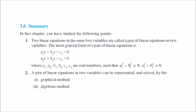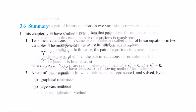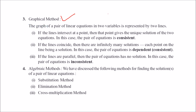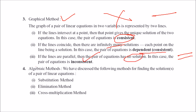To summarize: two linear equations in the same two variables are called a pair of linear equations in two variables. The general form is a1x plus b1y plus c1 equals 0 and a2x plus b2y plus c2 equals 0 (coefficients cannot all be zero). Methods to solve include graphical and algebraic methods. Graphically: if lines intersect, the solution is unique (consistent); if lines coincide, there are infinitely many solutions (dependent/consistent); if lines are parallel and never intersect, there is no solution (inconsistent). Algebraic methods include substitution, elimination, and cross multiplication.